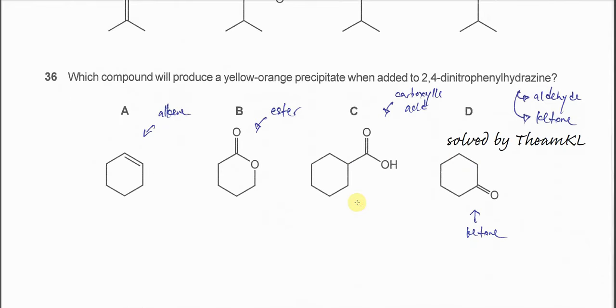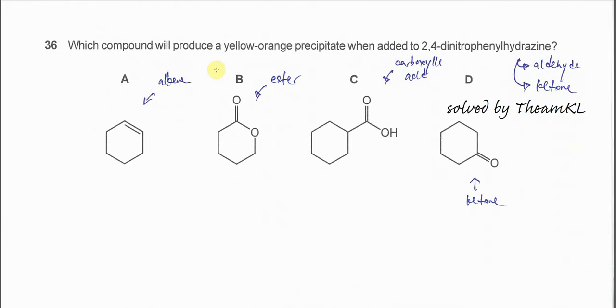Question 36: Which compound will produce yellow-orange precipitate when added to 2,4-DNPH?